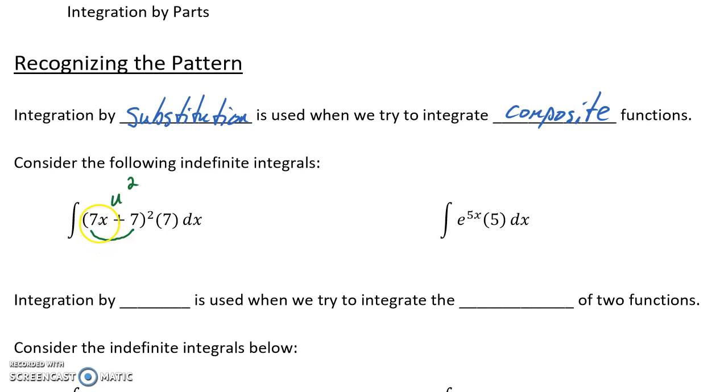And also as a nice result, if we were to take the derivative of 7x plus 7, that result would be 7, which matches up with this other piece of the function. That will become important as we move on.